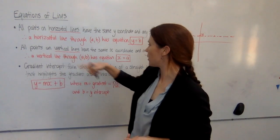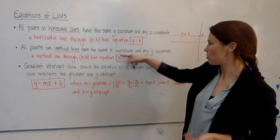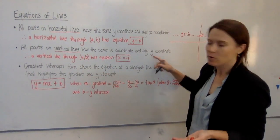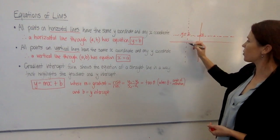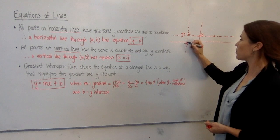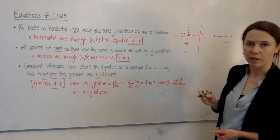Now all the points on vertical lines are going to have the same x-coordinate, but they're going to have any y-coordinate. So if we had, say, a line here that's vertical and goes through this point here on the x-axis minus 5,